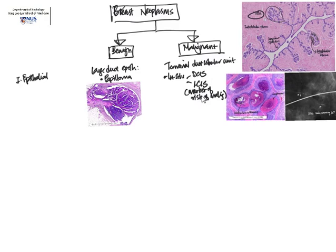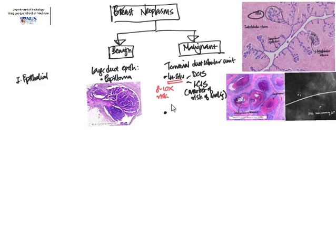For LCIS, this is more of a marker of risk of malignancy. There is a risk of malignancy not only in the same area but in a different area in the same breast and even in the contralateral breast. For both DCIS and LCIS, there is a significantly increased risk of malignancy of 8 to 10 times, compared with atypical ductal lobular hyperplasia and proliferative breast disorders without atypia.